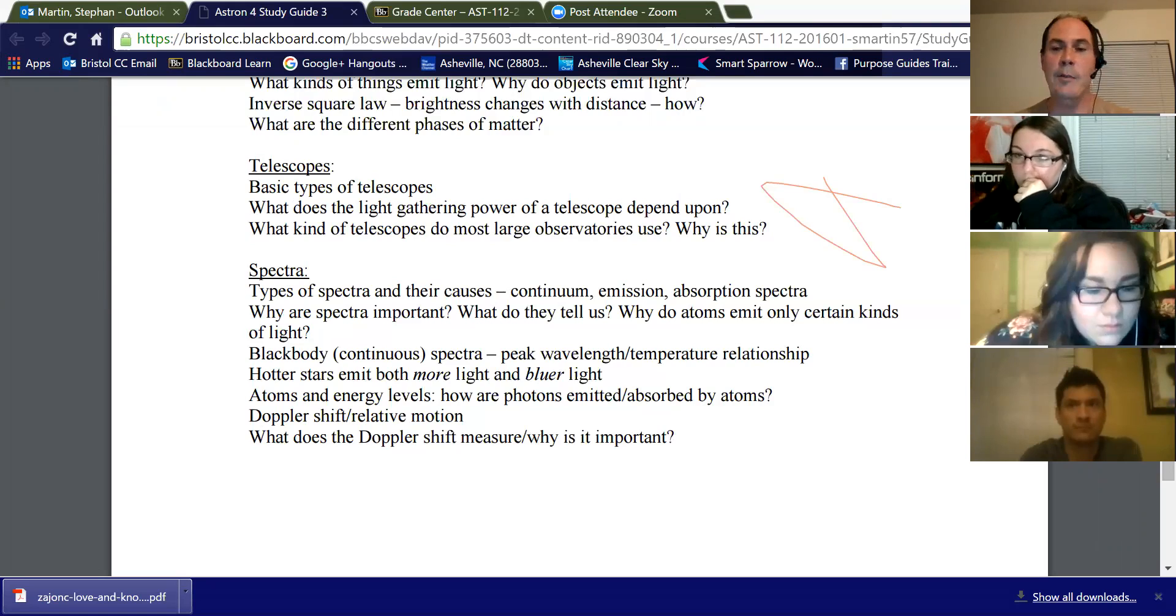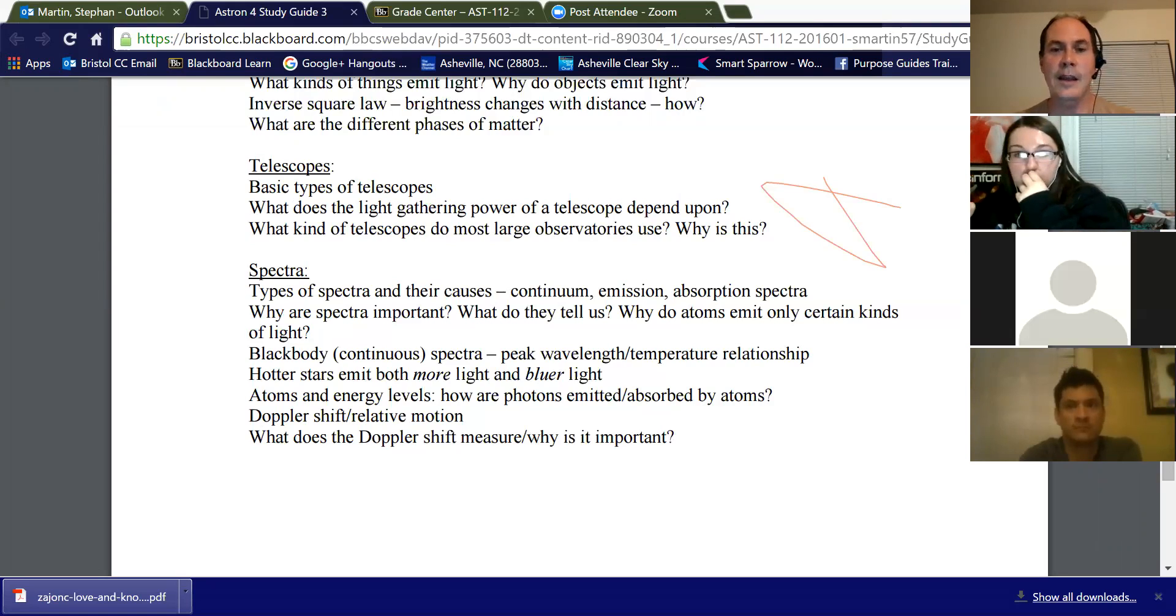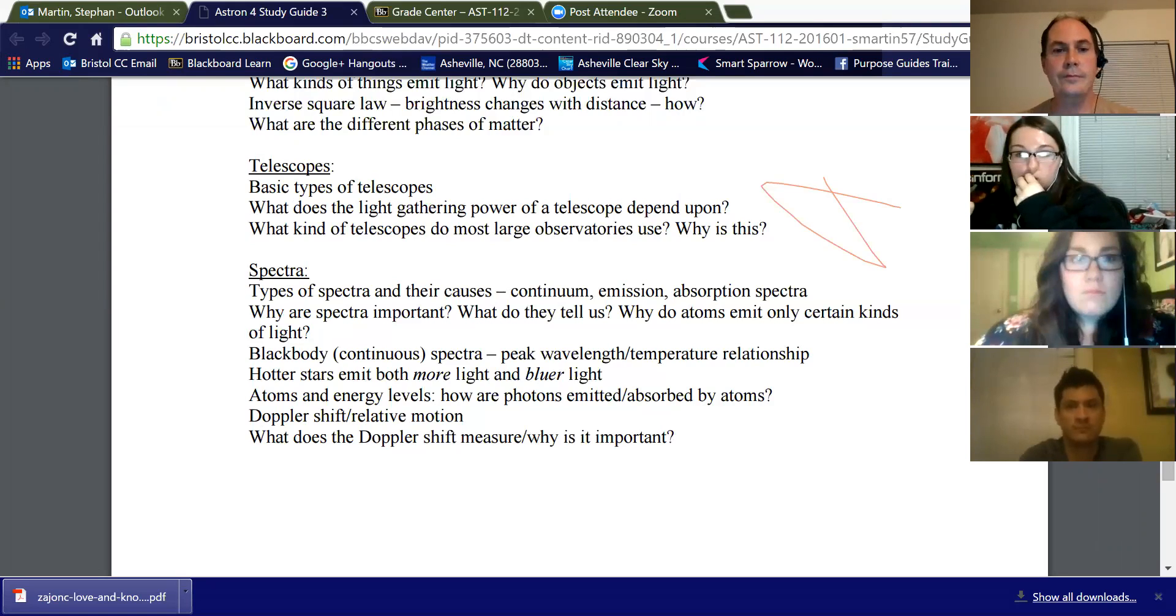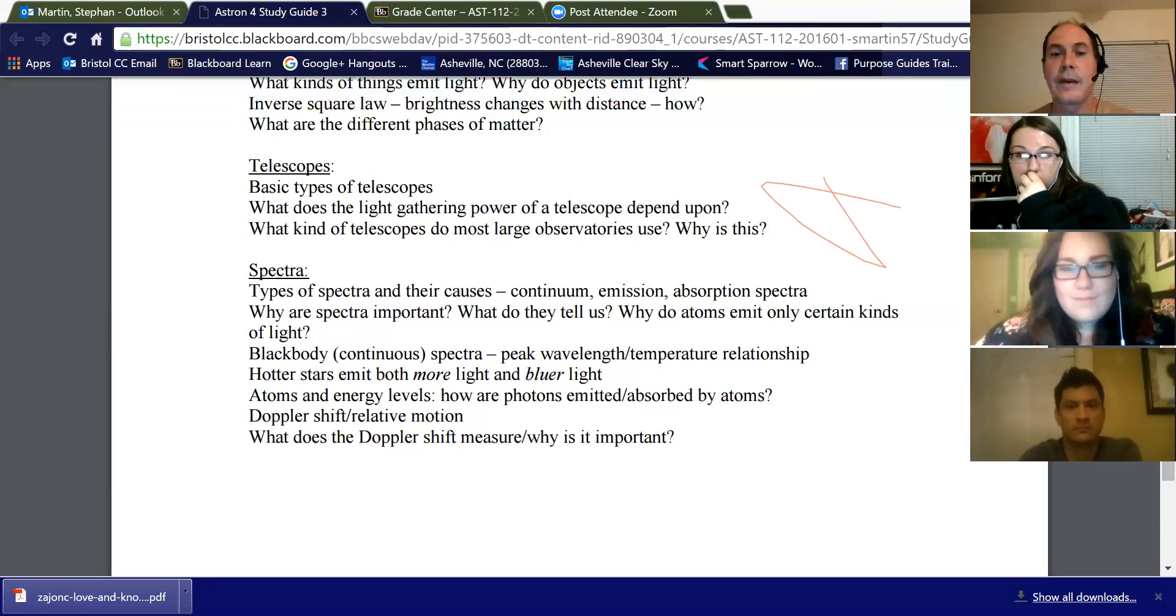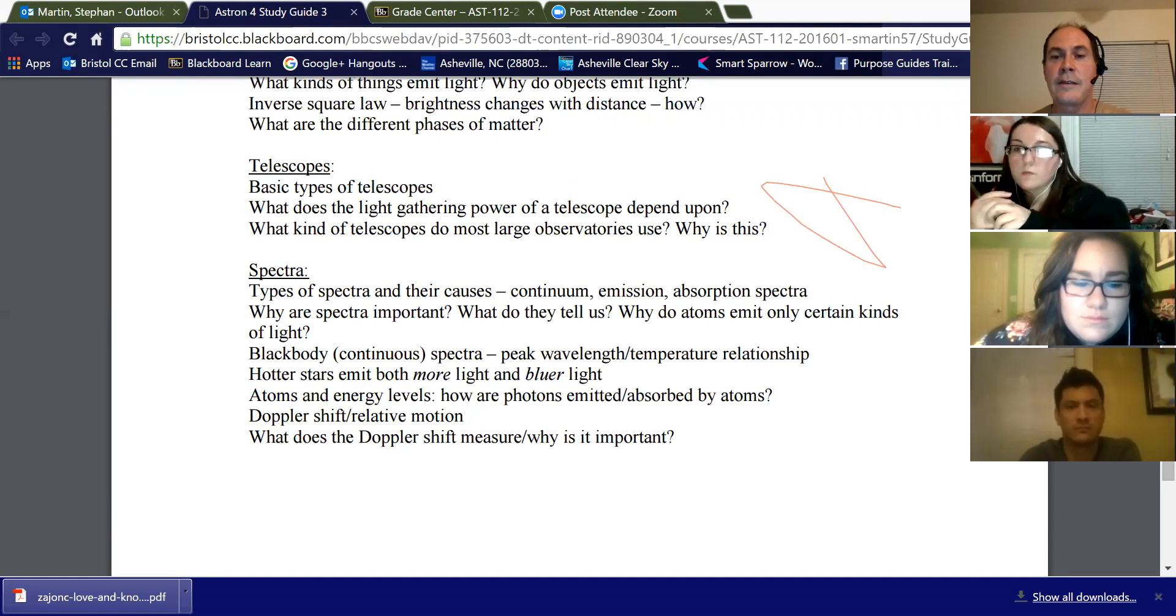So continuous spectra is basically a rainbow, and that's the spectrum emitted by an object that has a certain temperature. Now the peak of that continuum tells me the temperature of the object. So that's why continuous spectra is important. The hotter something gets, the further to the blue the continuum peak is.